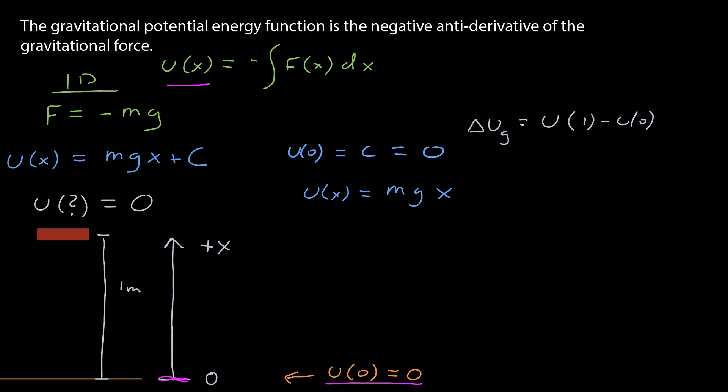Let's calculate the potential energy difference from lifting the book one meter. That's the potential energy evaluated at one — the final point — minus the potential energy evaluated at the ground. At one meter, that's just mg, and at zero, that's zero. If the mass of the book is one kilogram, the potential energy difference lifting the book one meter off the ground is 9.8 joules.